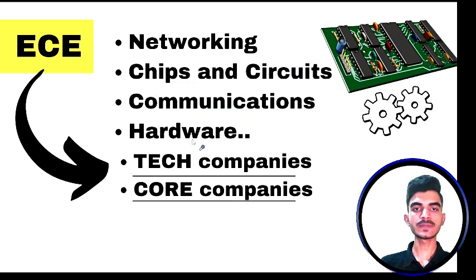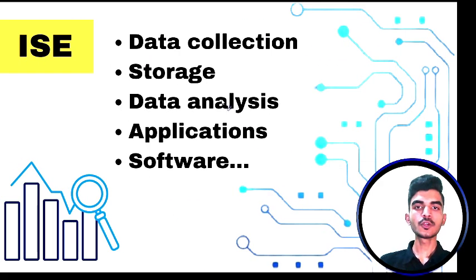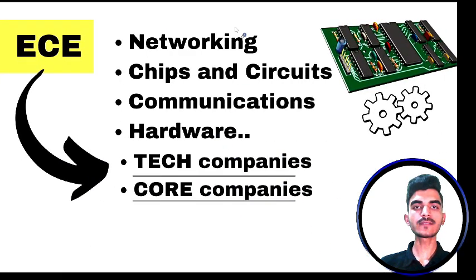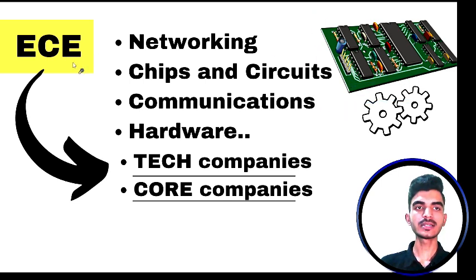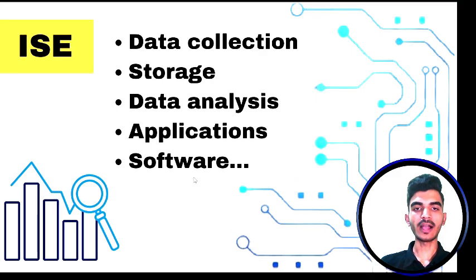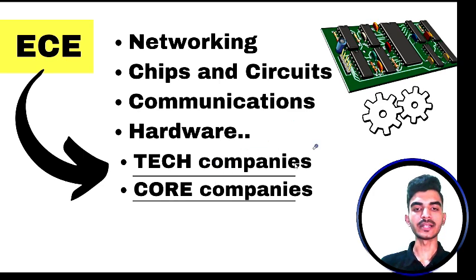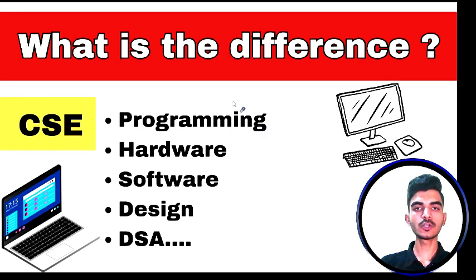When it comes to electronics, you will learn about the networking part, chips and circuits, communication systems, and hardware. In information science, you will not be learning about the hardware part — your major subjects will be on software, applications, apps, data analysis, and information storage. In electronics, you will not have many software subjects, but it will mainly focus on networking and chips. Circuits in the sense — like motherboard or semiconductor chips — the study of all these things comes under electronics and communication.